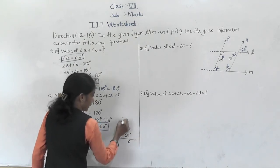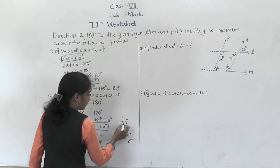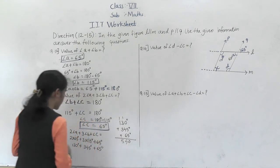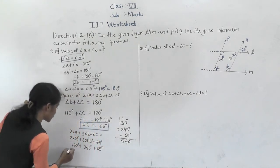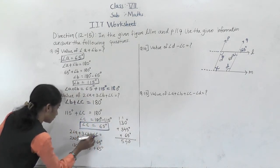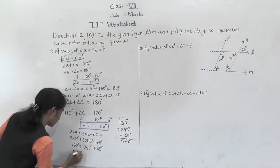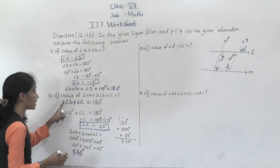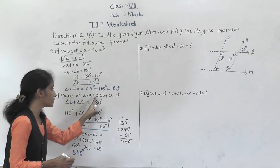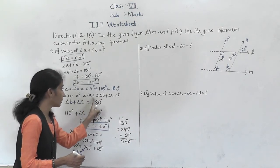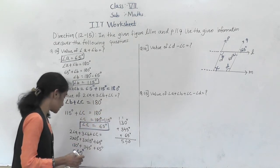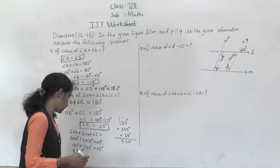Adding: 130 plus 345 plus 65. Taking units: 0 plus 5 plus 5 is 10, carry 1; tens: 3 plus 4 plus 6 plus 1 is 14, carry 1; hundreds: 1 plus 3 plus 1 is 5. So the answer is 540 degrees. Therefore 2 angle A plus 3 angle B plus angle C equals 540 degrees.